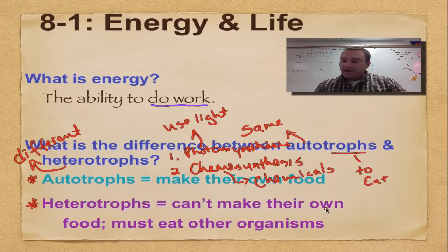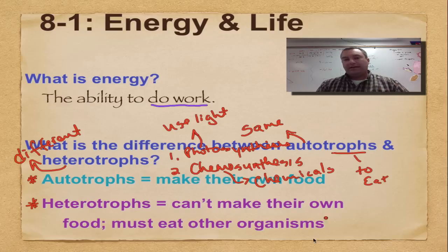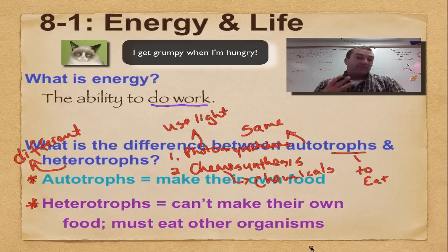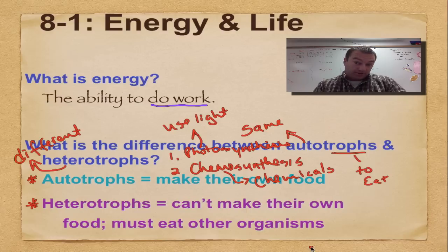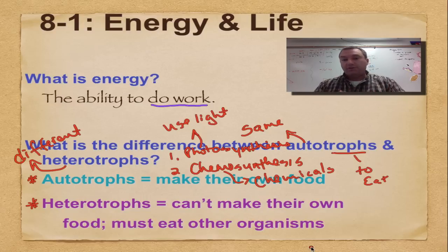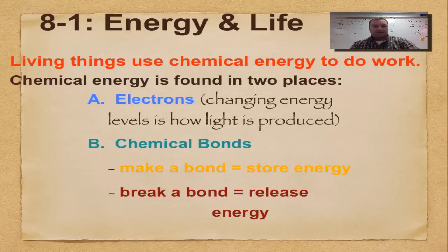Heterotrophs can't make their own food, so you got to go eat something. Every human being is a heterotroph. In fact, every animal is a heterotroph, every fungus is a heterotroph. Most protists are, though some protists are photosynthetic. Of course, all plants are. When it comes to bacteria, most are heterotrophs, but a few are photosynthetic, but not a ton of them.